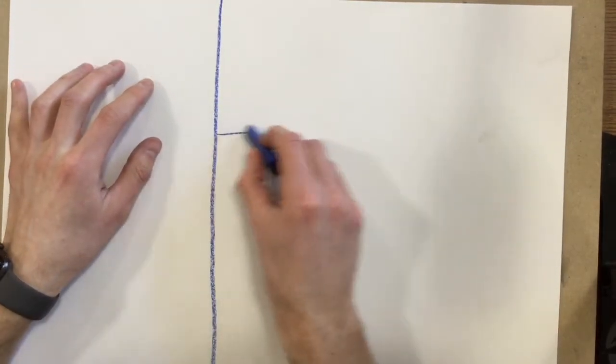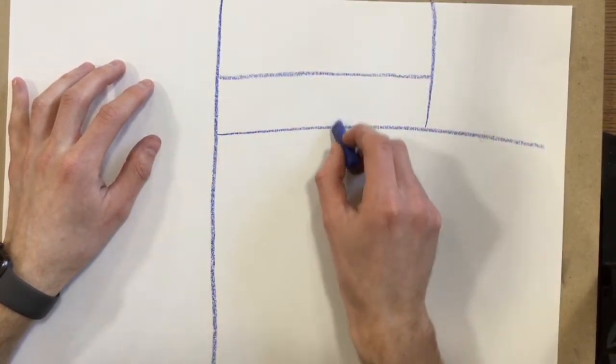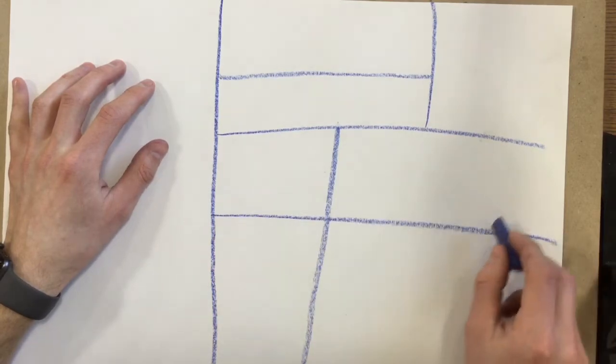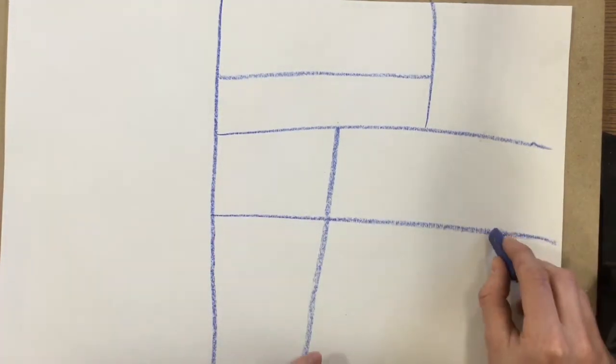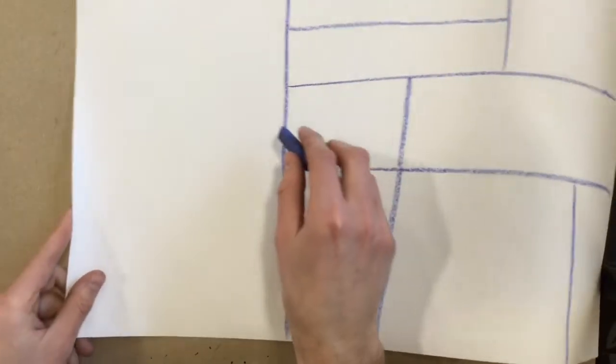and some horizontal lines. So I'm going to draw those all over the place. Vertical and horizontal. I've got about half my paper done, do a few over here.